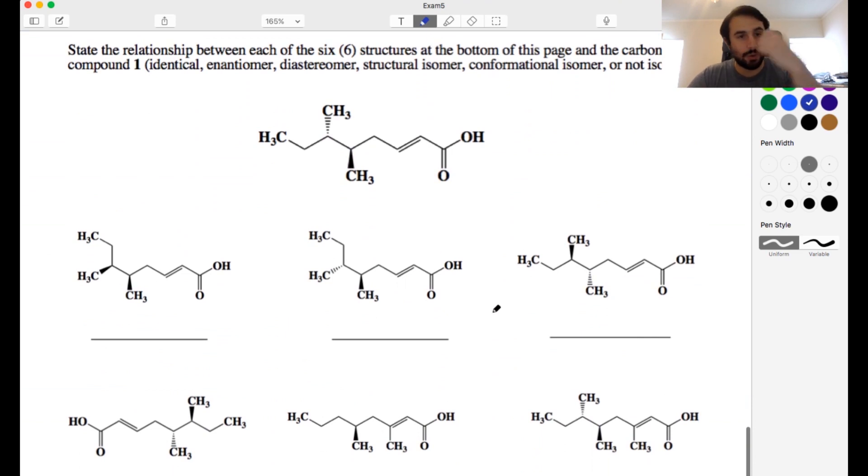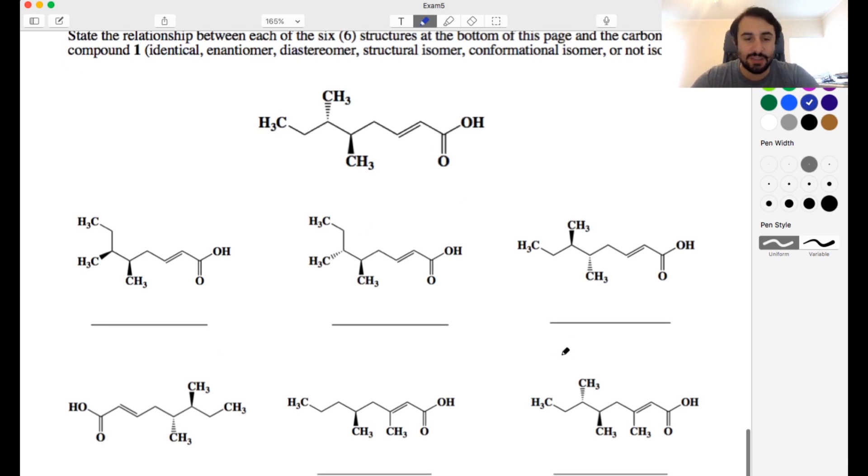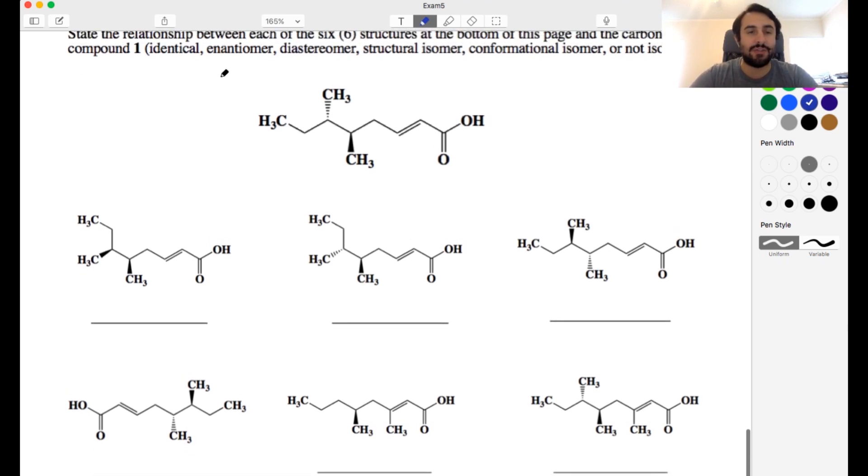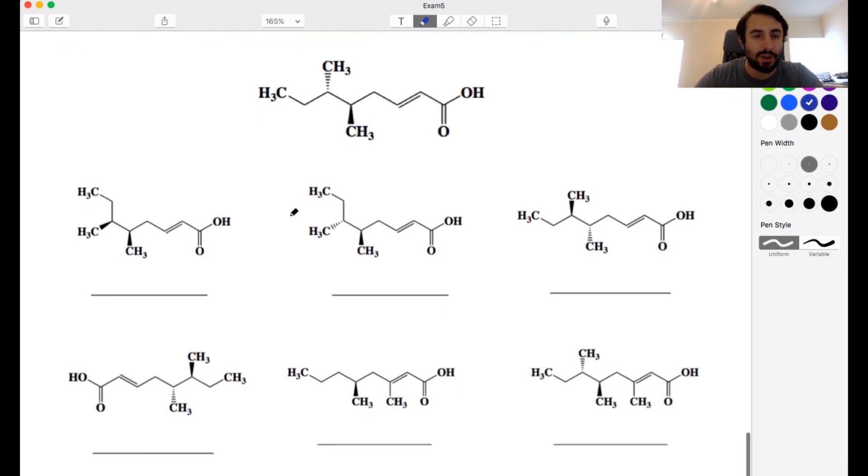Okay, so we want to state the relationship between each of the six structures at the bottom of the page and this carbonyl containing compound. So this is the reference molecule. And then each of these we want to say if it is identical to this, the enantiomer, a diastereomer, a structural isomer, a conformational isomer, or not isomeric. So this is a great exercise for seeing if you know what all these mean and you can identify these relationships. So let's look at this first one.